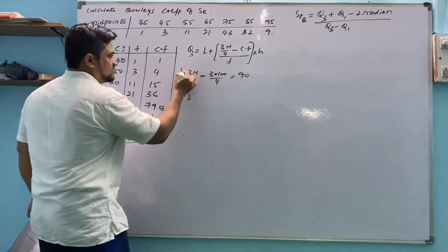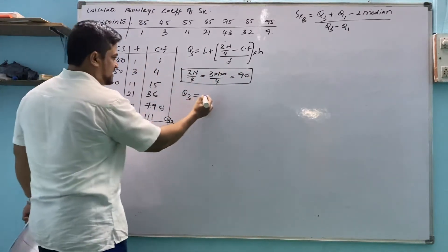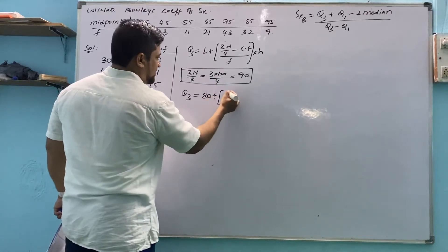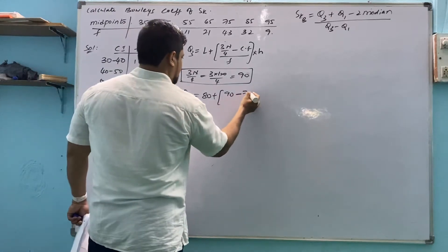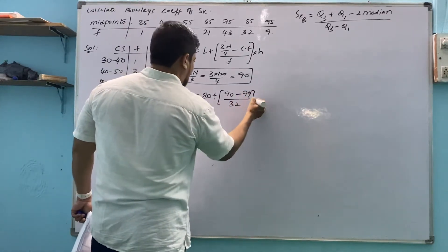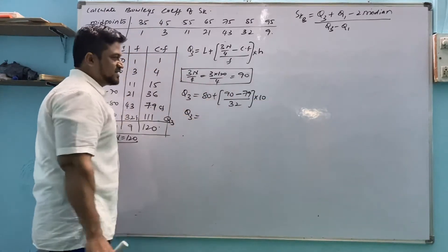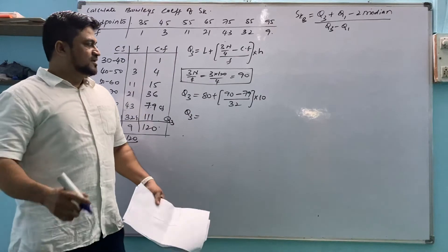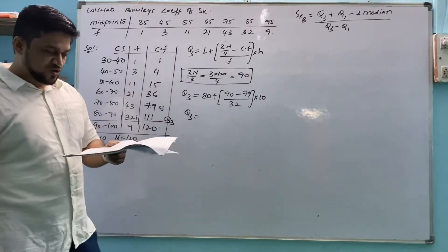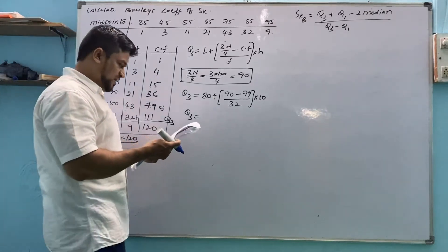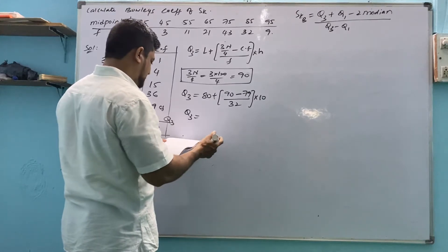So Q3 equals to what do we find? 3n by 4. Q3 equals to l plus - l is 80 plus 3n by 4 minus cf opposite upper value by small f, 32 into h, 10. So Q3 equals to 90 minus 79 divided by 32 into 10 plus 80 at the end. So we got Q3 as 83.437.